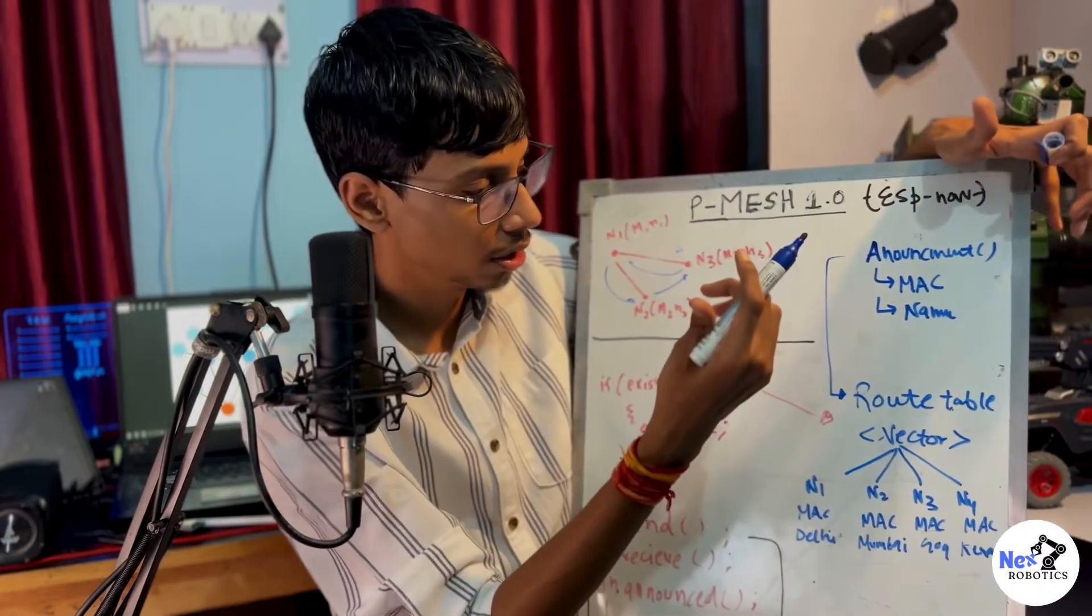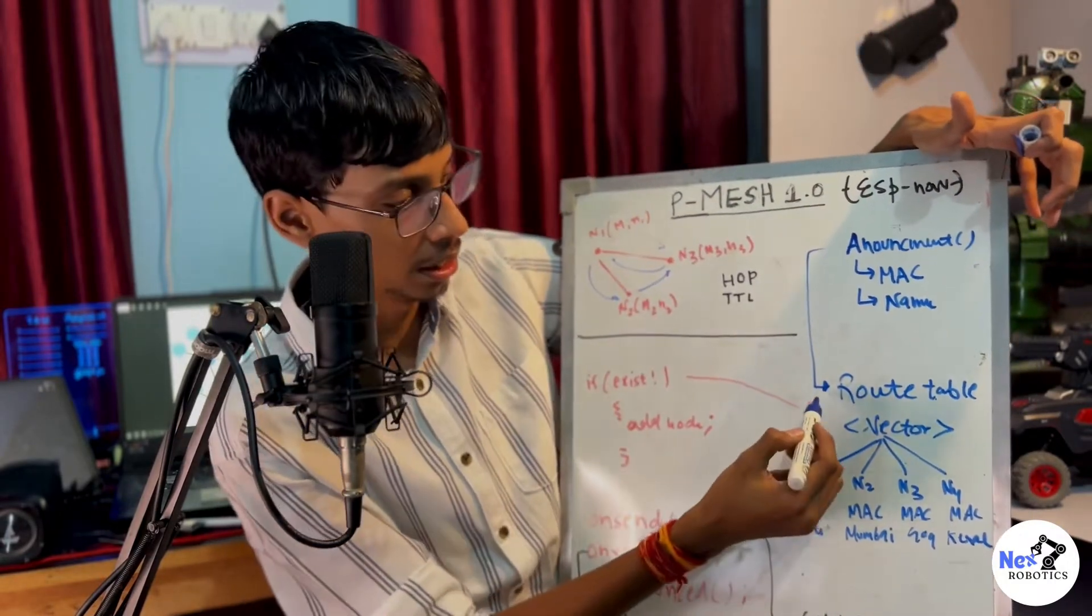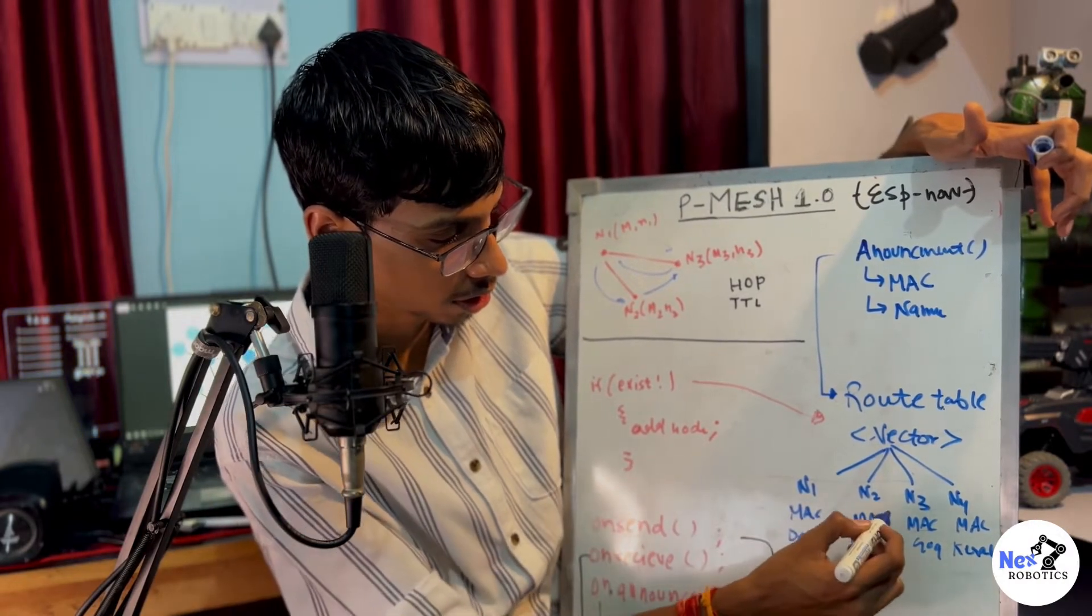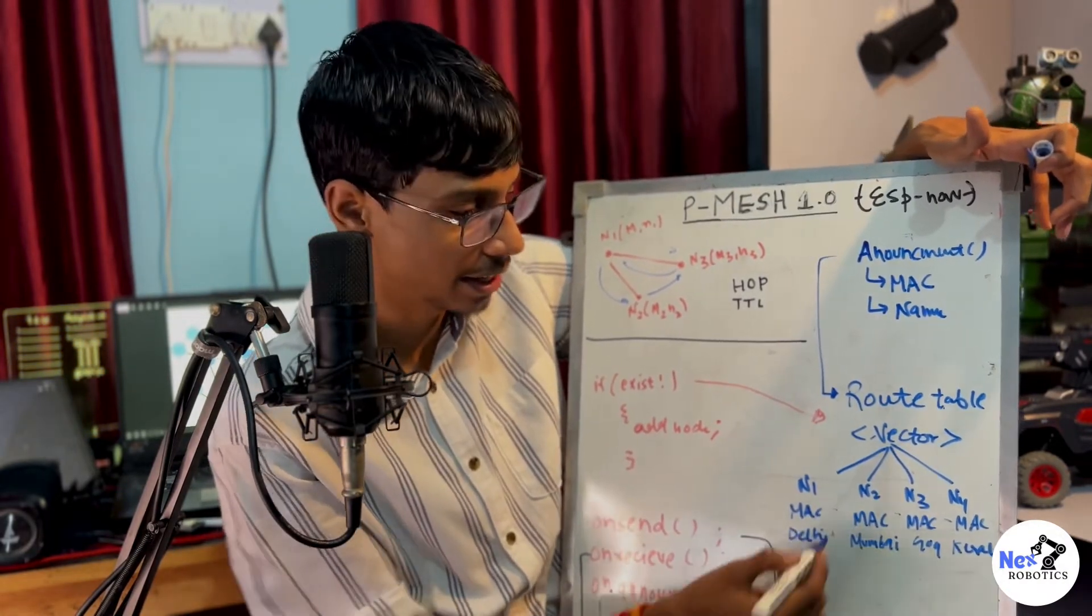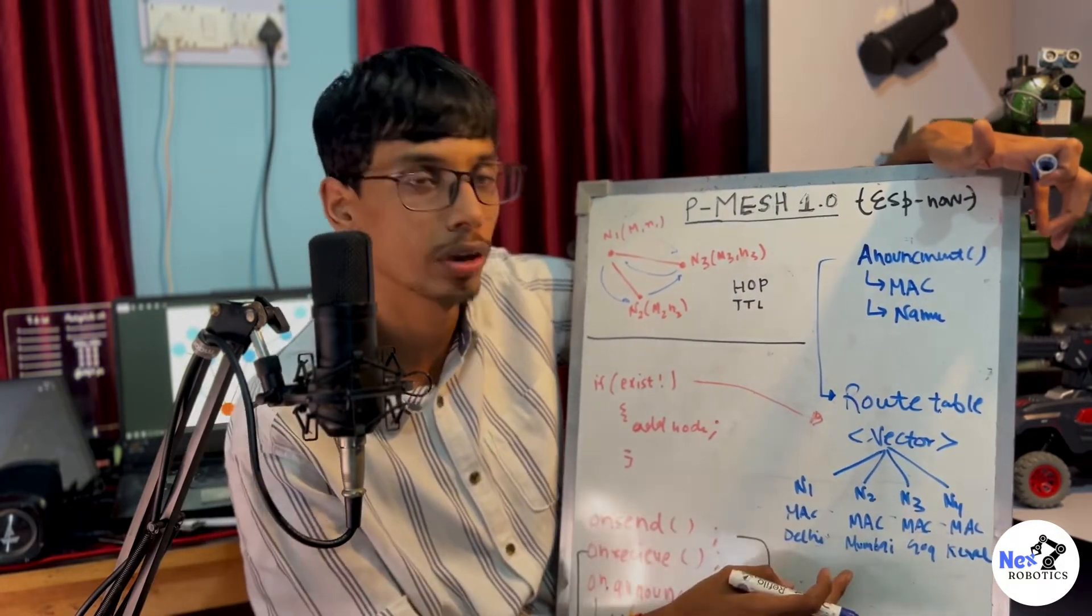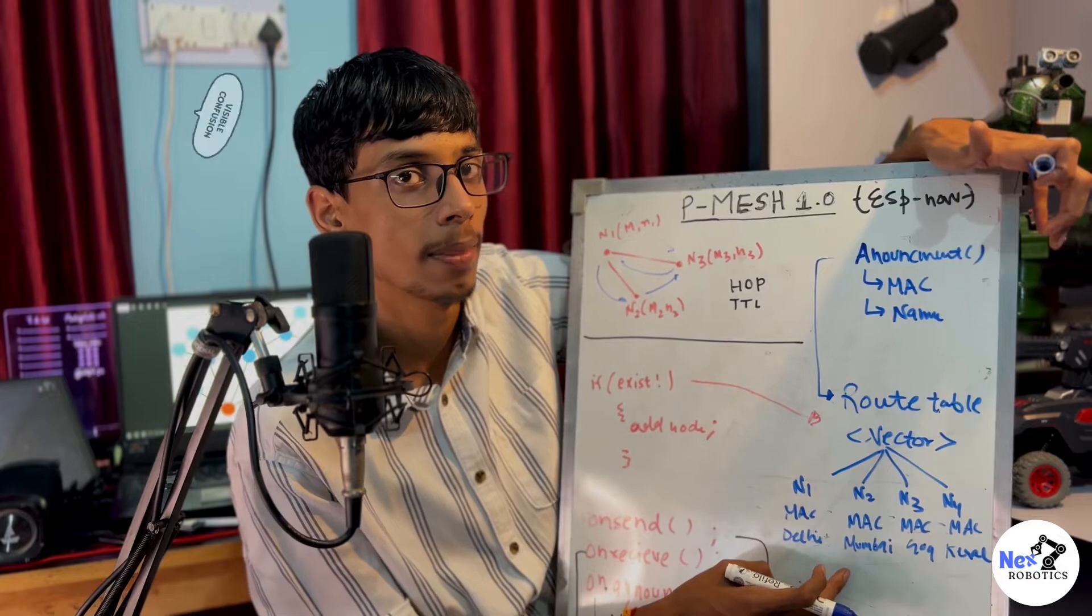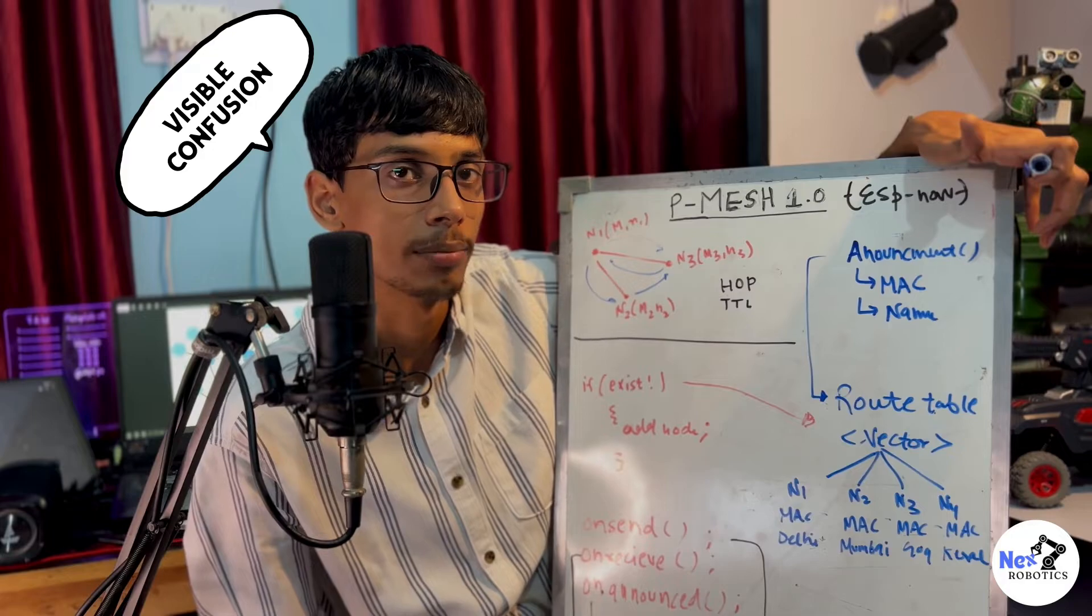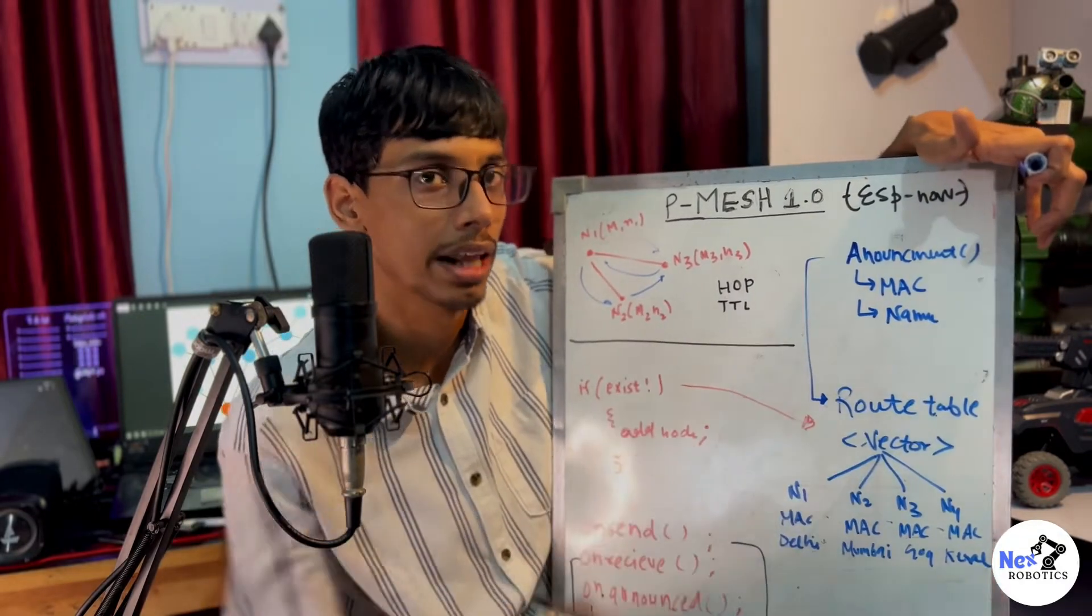And after the announcement function, whenever there is a new announcement, each node will maintain a routing table so that they can have neighbors' node MAC address and name. So all I need is just to select which node I need to send message to and I already know the MAC address, so I think I can convey message. So let's code that.